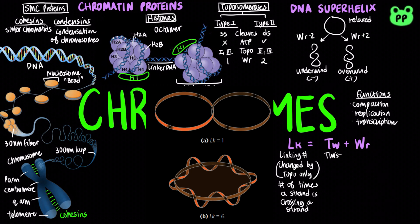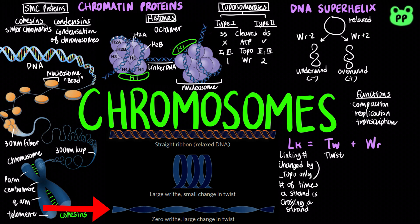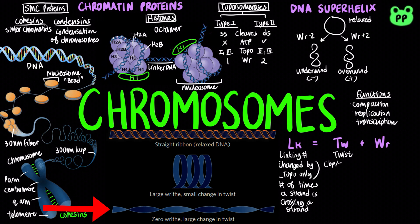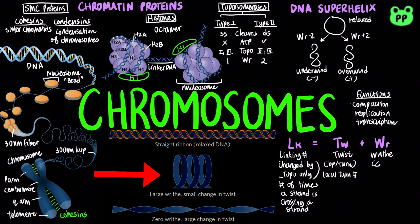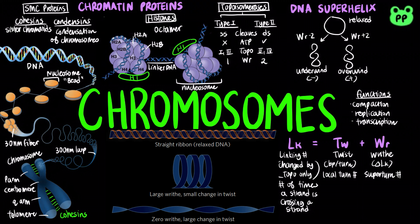Linking number can be broken down into two structural components. Twist is defined by base pairs per turn, and represents the local twisting or spatial relationship of neighboring base pairs. Writhe is a measure of the coiling of the helix axis, or the number of superturns. When the linking number changes, some of the resulting strain is usually compensated for by writhe or by changes in twist.